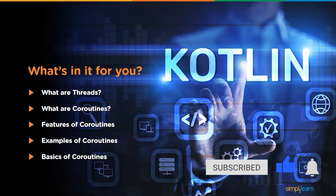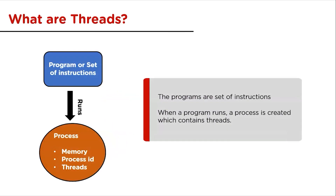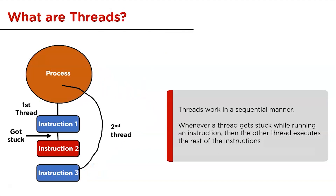So what are threads? To understand coroutines in detail, first we will have to understand threads. Programs are just a set of instructions. When a program runs, a process is created which contains memory, process ID, etc. In that process there are threads that are used to execute information. Every process has at least one thread. Threads help with high-performance applications and work in sequential order — whenever a thread gets stuck, another thread executes the remaining instructions.